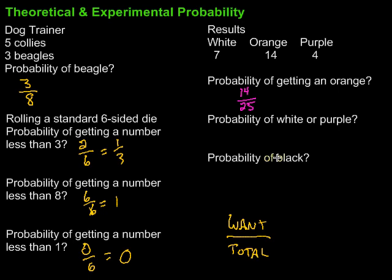Probability of white or purple? I need to total up the white and purple. So we have 7 plus 4, which would be 11 over 25.